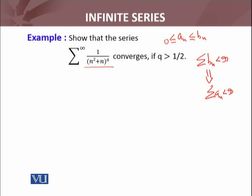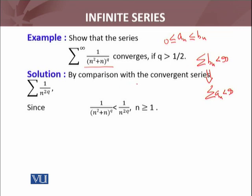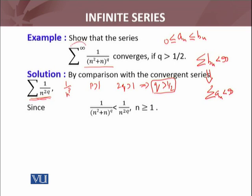By the comparison test, we compare with the convergent series 1 over n^p. This series is convergent when p is greater than 1. Here, in place of p we have 2q, so this series will be convergent if 2q is greater than 1, which implies q is greater than 1/2. So we will compare this series with the p-series.